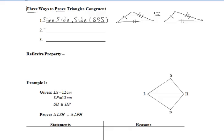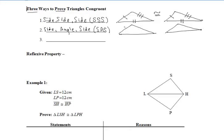A second way is Side-Angle-Side, abbreviated SAS. Keep in mind, there are restrictions: if we have one pair of congruent sides and another pair of congruent sides, the angle must be located in between the two sides. The congruent angles in the triangles must be the angles included by the pairs of congruent sides. You should be able to trace it in your triangle: side, angle, side. If that is true, then the two triangles are congruent.